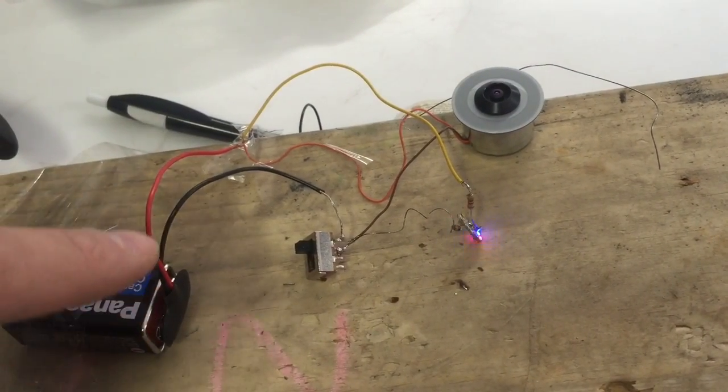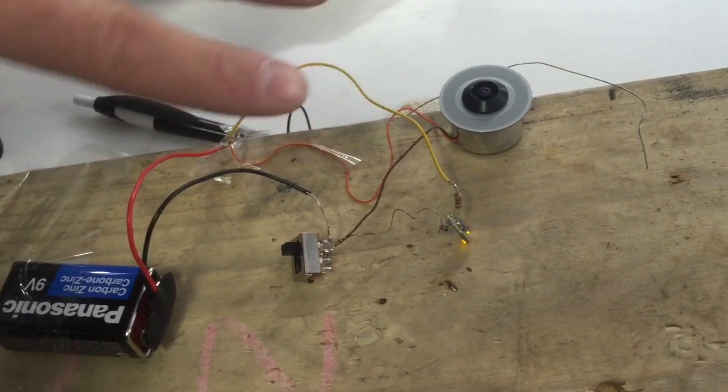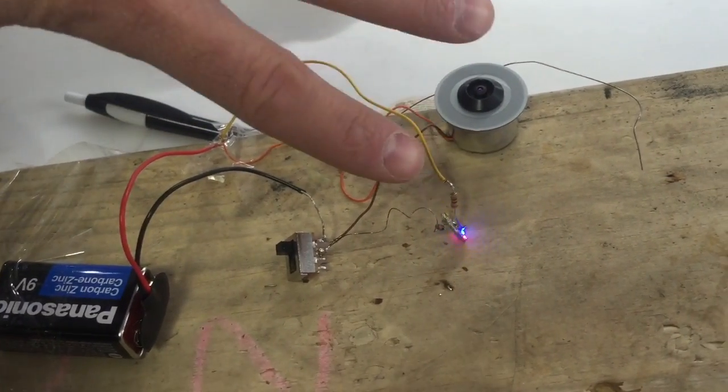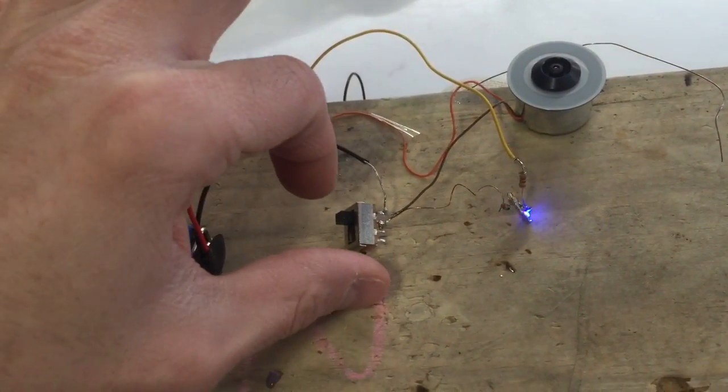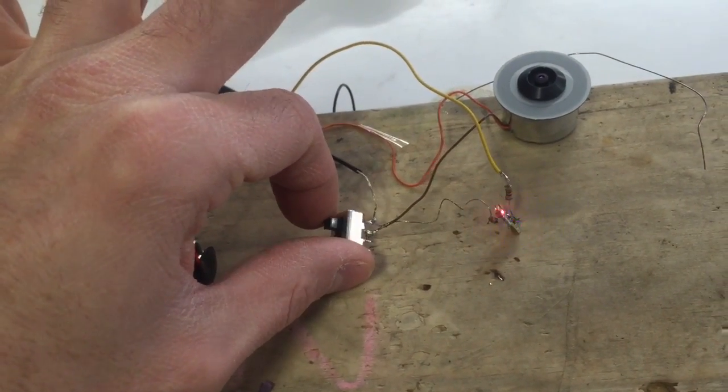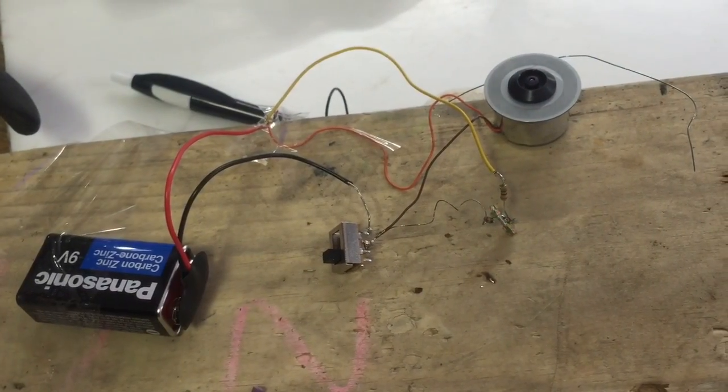And what I've done is see they're sharing the positive power and it's getting split before it gets to the motor and before it gets to the LED light. But they all come back to the negative side of the on and off switch. And when I turn this off, the motor and the LED light should stop working. And there you go.